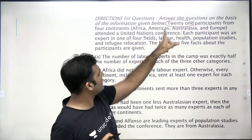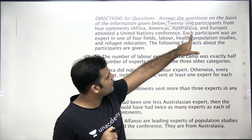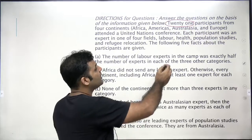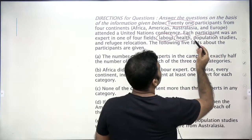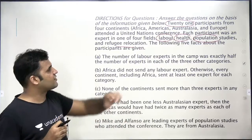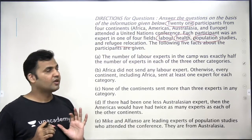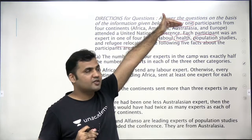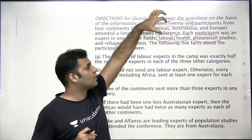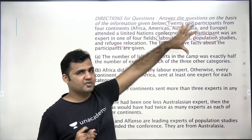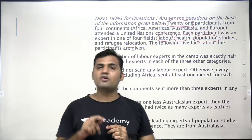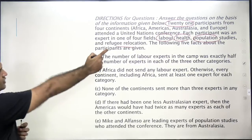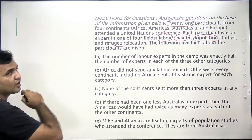Each participant was an expert in one of four fields: labor, health, population study, and refugee relocation. After reading this first paragraph, you understand that you are supposed to arrange these 21 participants, who are coming from different continents and attending the conference on different subjects. So there has to be a four-by-four table that you need to make, with continents — Africa, America, Australia, and Europe — as one variable.